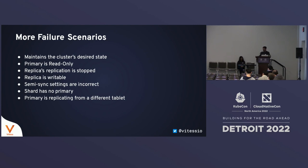Apart from primary failures, VTOrc also handles many other failure scenarios that MySQL instances run into — for example, if the primary goes into a read-only state or a replica's replication is stopped. VTOrc maintains the cluster's desired state. If you have VTOrc running, it's an automated system where you don't need to look at anything until something drastic happens that you didn't prepare for. In that case, manual intervention is required; otherwise VTOrc is an automated process that keeps your cluster healthy.